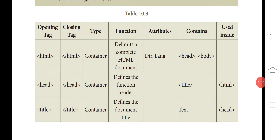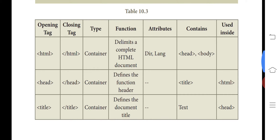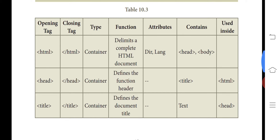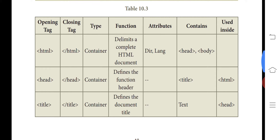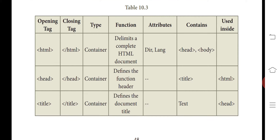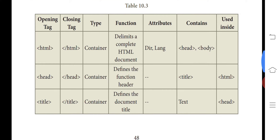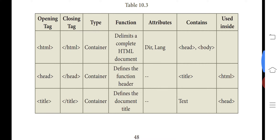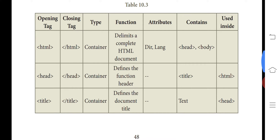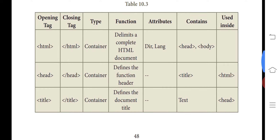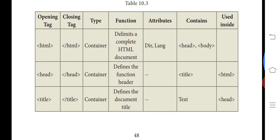Now let's look at some of the tags used in HTML and their uses. The first is the HTML tag — its opening tag is HTML and the closing tag is slash HTML, making it a container type. Its function is that it delimits a complete HTML document; it tells whether the document is an HTML document.